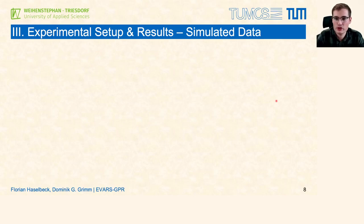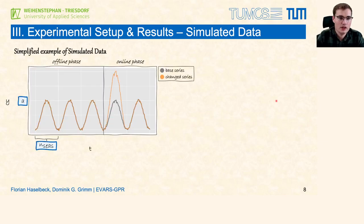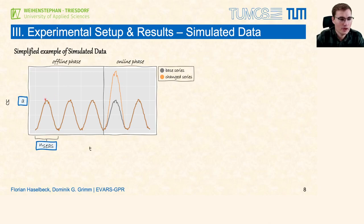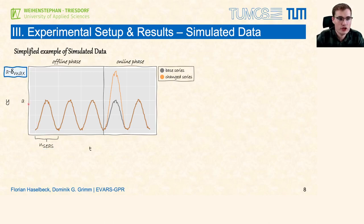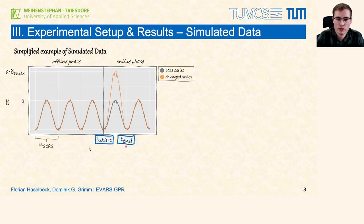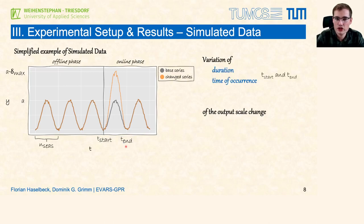To explain the variation on the simulated data I would like to introduce a simplified example. In the plot one can see the base series as well as the changed series with the output scale change. Furthermore, we have data during the offline phase to train the initial model and during the online phase to evaluate the performance of the different approaches. We are able to adjust the amplitude as well as the length of a season. Regarding the output scale change, we can vary the maximum manipulation factor delta max, the slope parameter kappa which controls the increase of the change factor up to delta max, and the start and end indices of the output scale change.